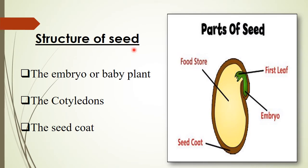Let us study the structure of a seed. A seed is made up of three parts: the embryo, cotyledons, and seed coat. The embryo, or baby plant, will turn into a seedling when it gets the right conditions such as warmth, water, and air. Cotyledons are also known as seed leaves — they store food for the growing embryo until it puts out new leaves. The seed coat is the outer covering around the cotyledons that protects the embryo.